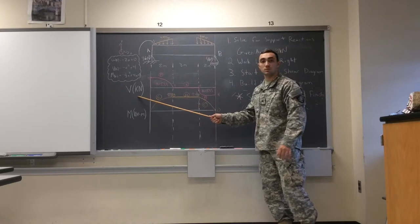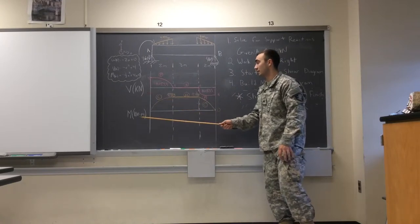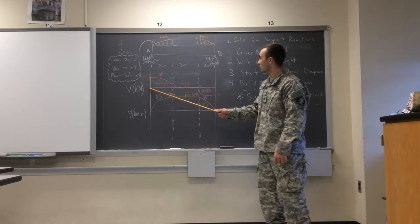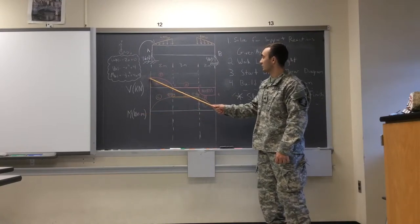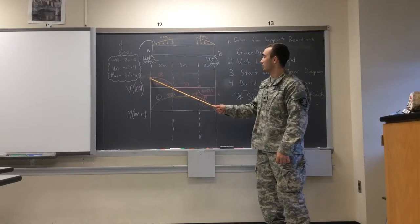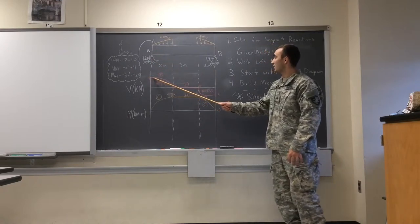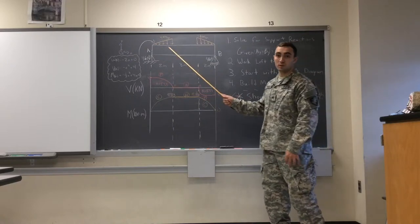The first one you're going to do is your shear diagram. We got kilonewtons, we got kilonewtons times meters. Our support reaction is four kilonewtons. So you're going to start right at four kilonewtons because it's working upwards. And then, you're going to come down, it's going to be concave down for this first ramp load.